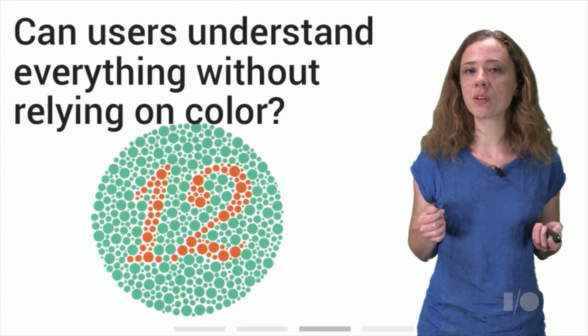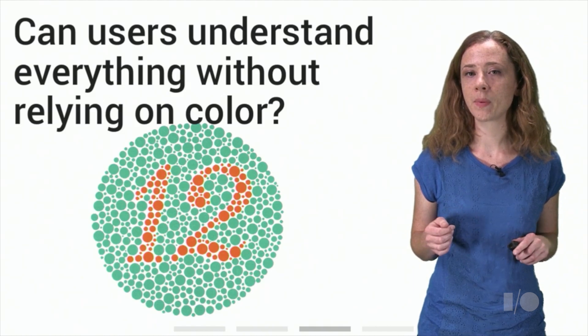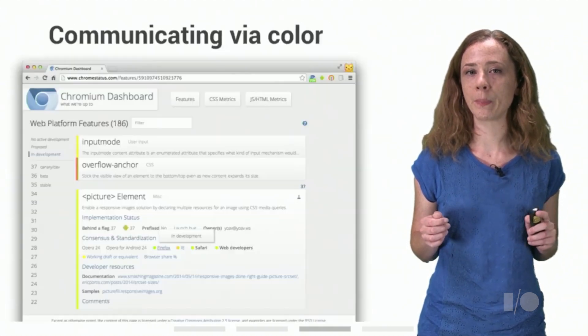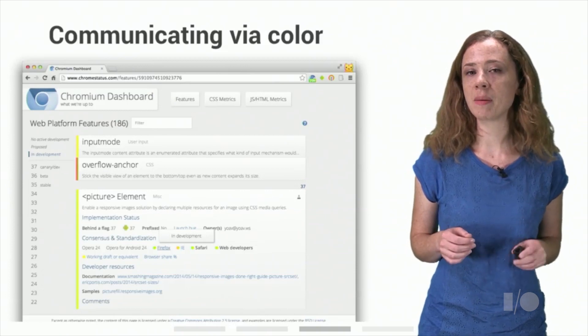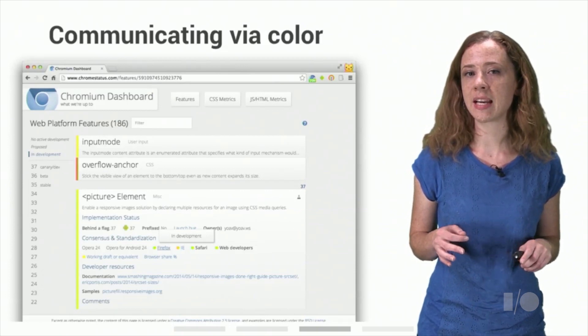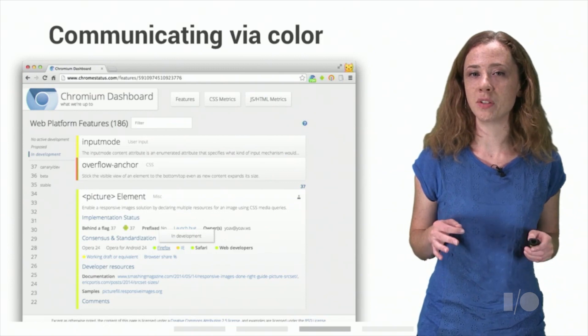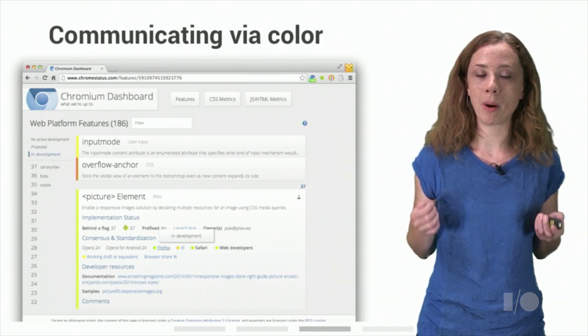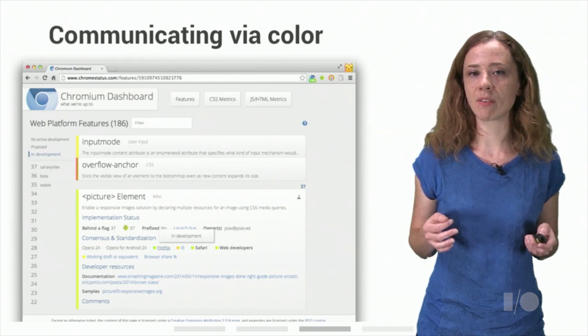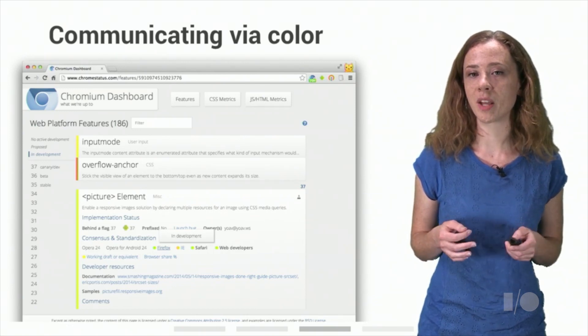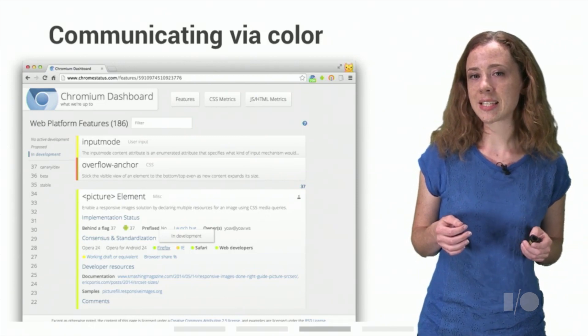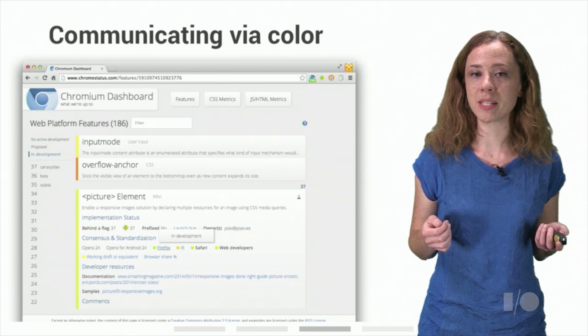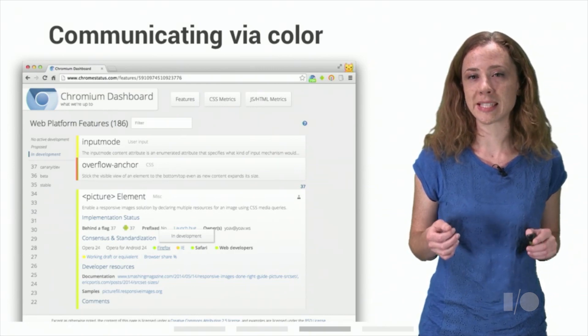We also need to make sure that users with any form of colorblindness can use our element. Firstly, this means making sure that we're not communicating anything with color alone. Color shouldn't be used as the only means of conveying information, such as indicating a status, prompting for response, or distinguishing a visual custom element. Here we have the Chromium dashboard, which as well as being a Polymer application, gives a status for each new web platform feature being developed or shipped in Chromium. Since the color dots next to the stakeholders are meant to convey information, the developers added a tooltip here, which appears when you hover over the name giving the same information.